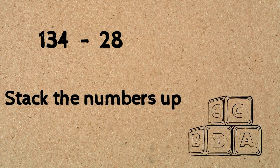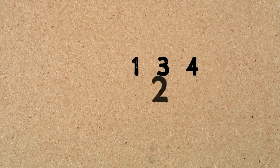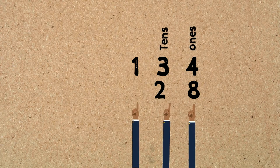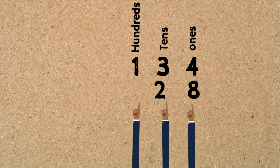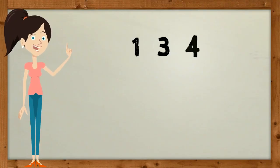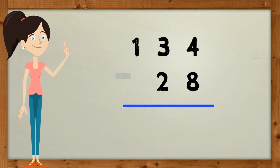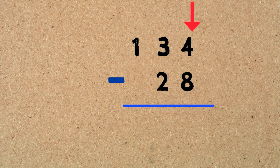Now let's try another problem: 134 take away 28. The first thing we always do is stack the numbers up — the bigger number goes on top and the smaller number goes at the bottom. All the place values are lined up equally: ones in one column, tens in one column, and hundreds in one column. We draw a line underneath the numbers for our answers and a minus sign on the left-hand side.